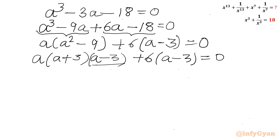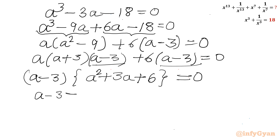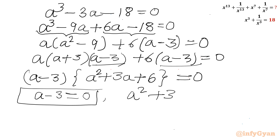Taking a minus 3 common, we get a minus 3 times a times a plus 3 plus 6, using the difference of two squares identity for a square minus 9. So the factored form is a minus 3 times a squared plus 3a plus 6 equal to 0.